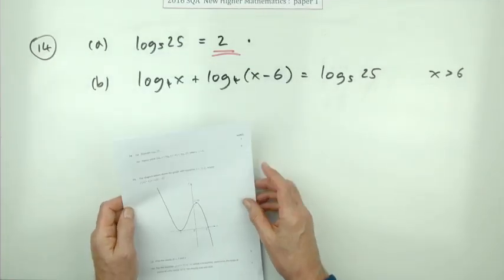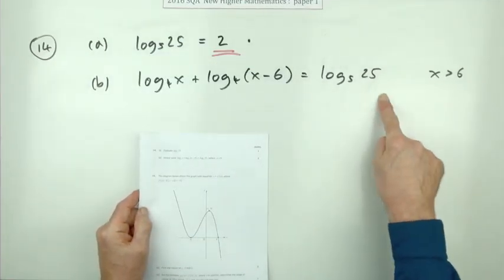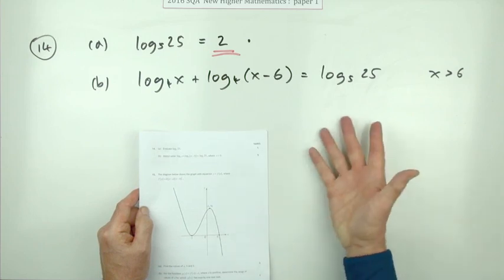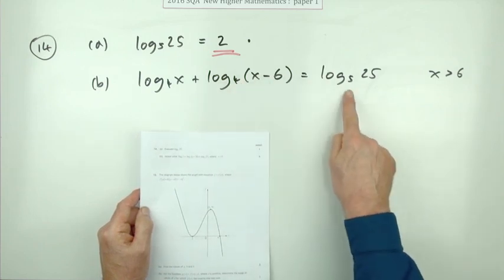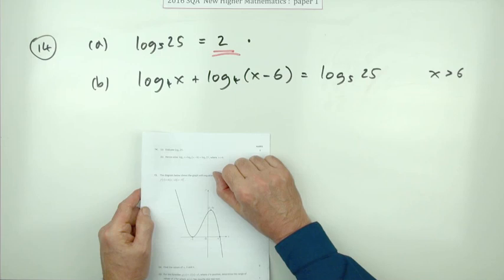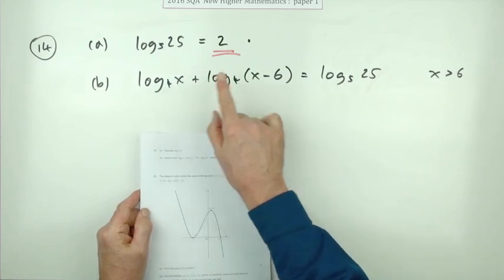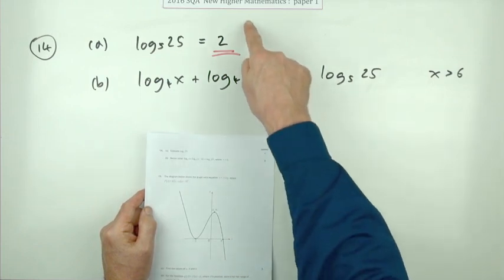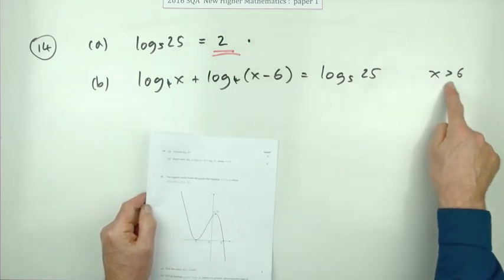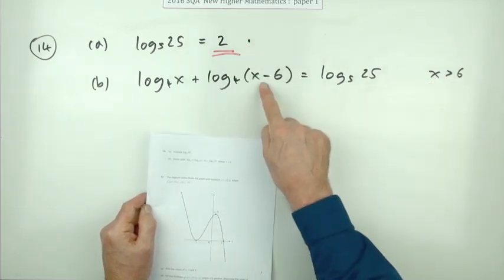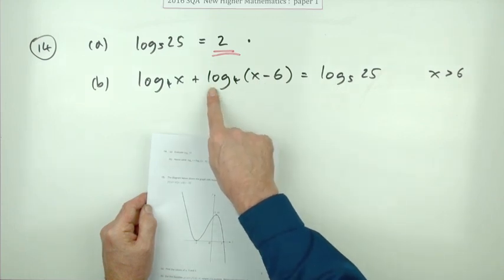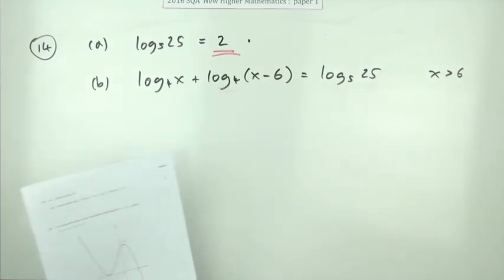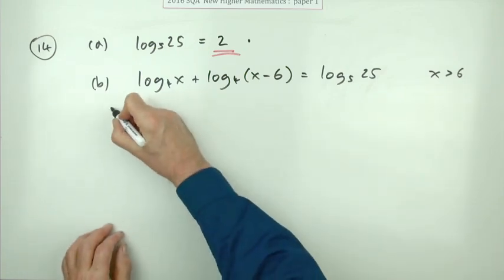Part B, worth 5 marks: solve this log equation. Notice you've got base 4s and base 5s, but that's not a problem because one of them is just a number from part A. There's a constraint: x is greater than 6, because you only get logarithms for numbers greater than zero.